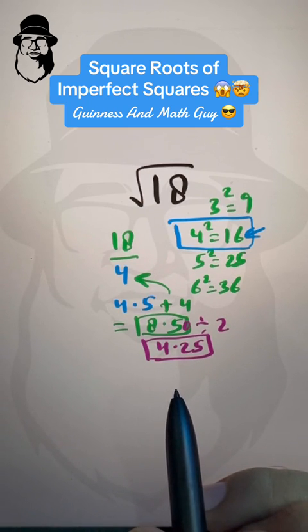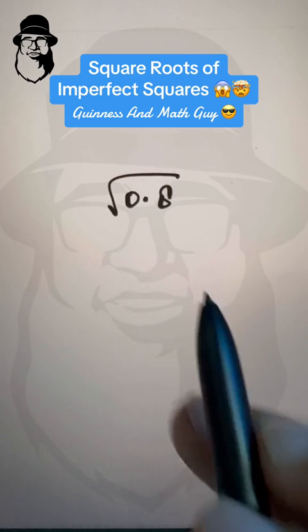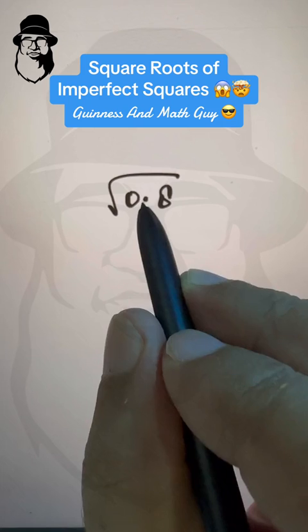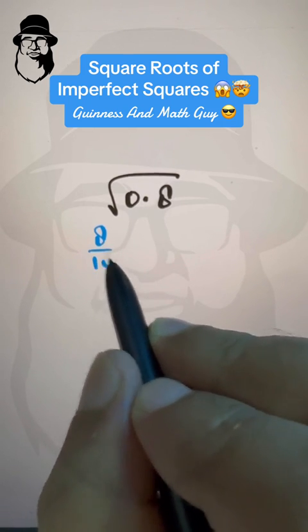Let's do a couple of more examples. So, now let's do something with decimals. Don't be afraid, to get rid of this decimal, we can write it as 8 over 10, right?